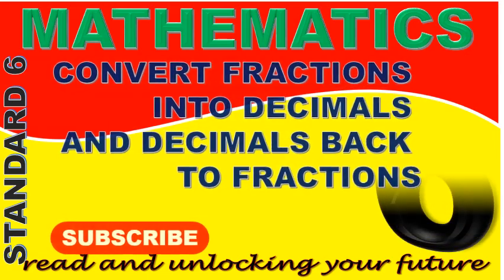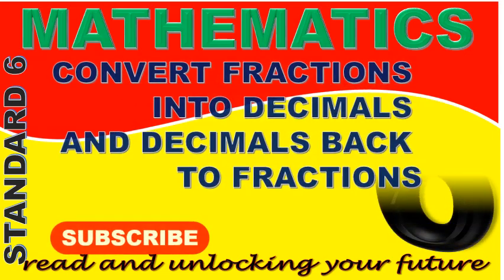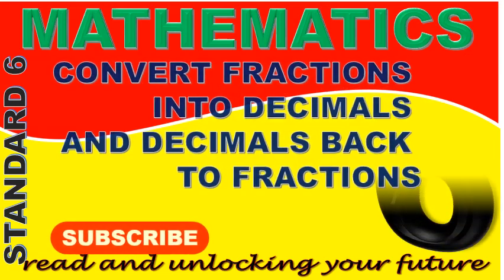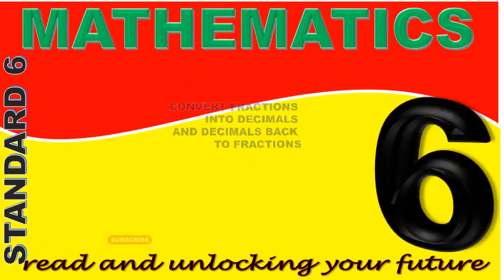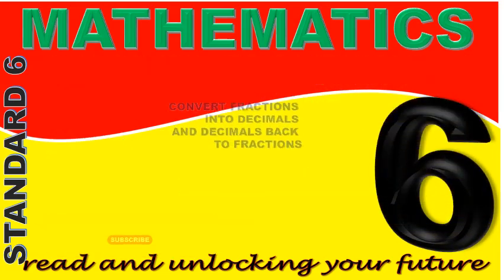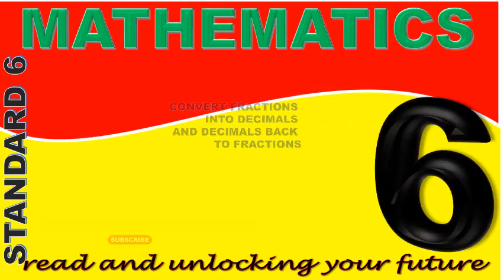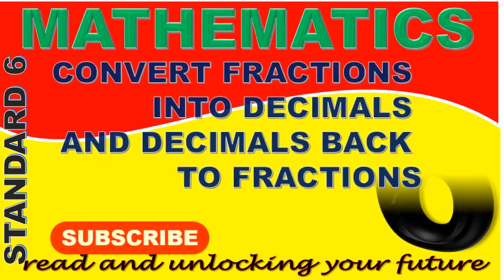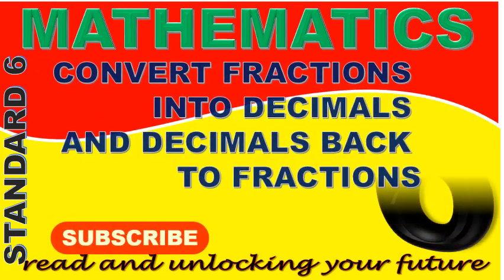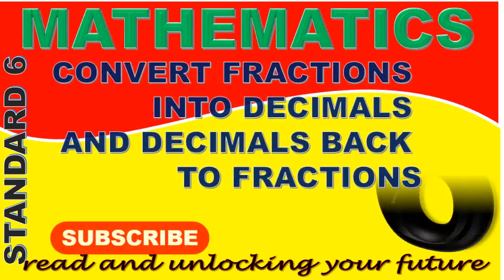This is called a terminating decimal. In using the long division method to convert fractions into decimals, we will encounter decimals that do not seem to end. Such decimals will not end no matter how long you continue to divide. To write the answer to such decimals, a dot is placed above the number or numbers that repeat themselves. These decimals are called recurring decimals.